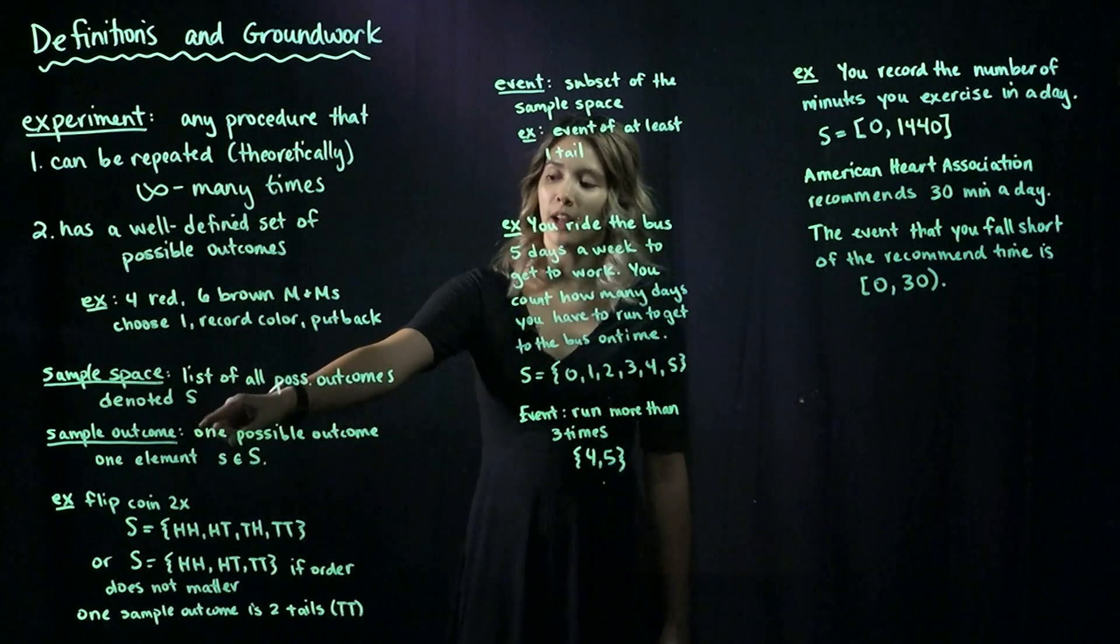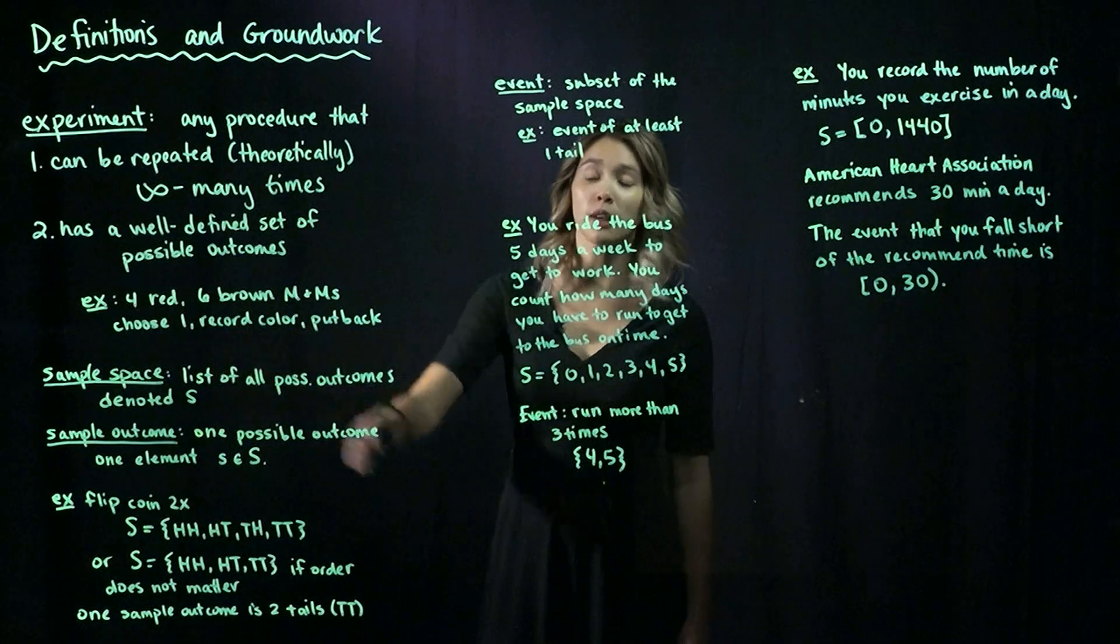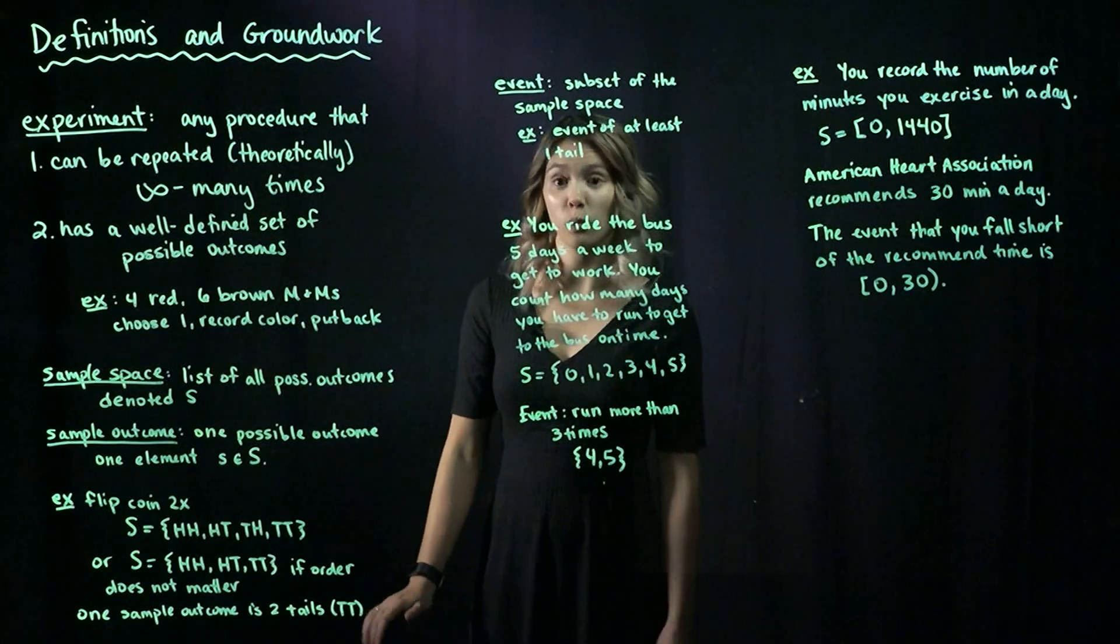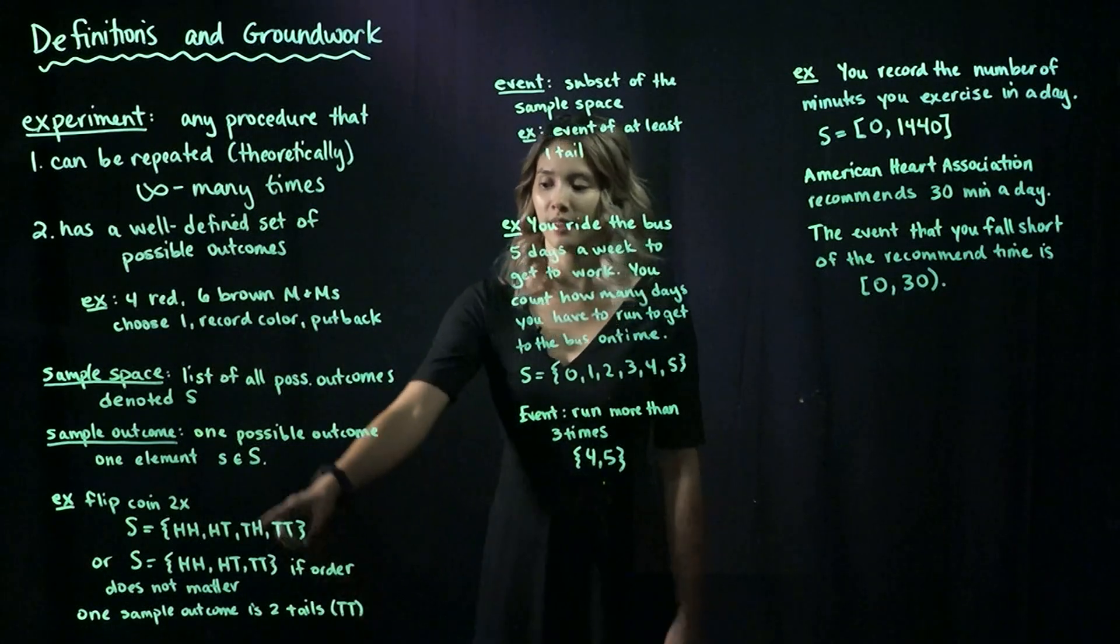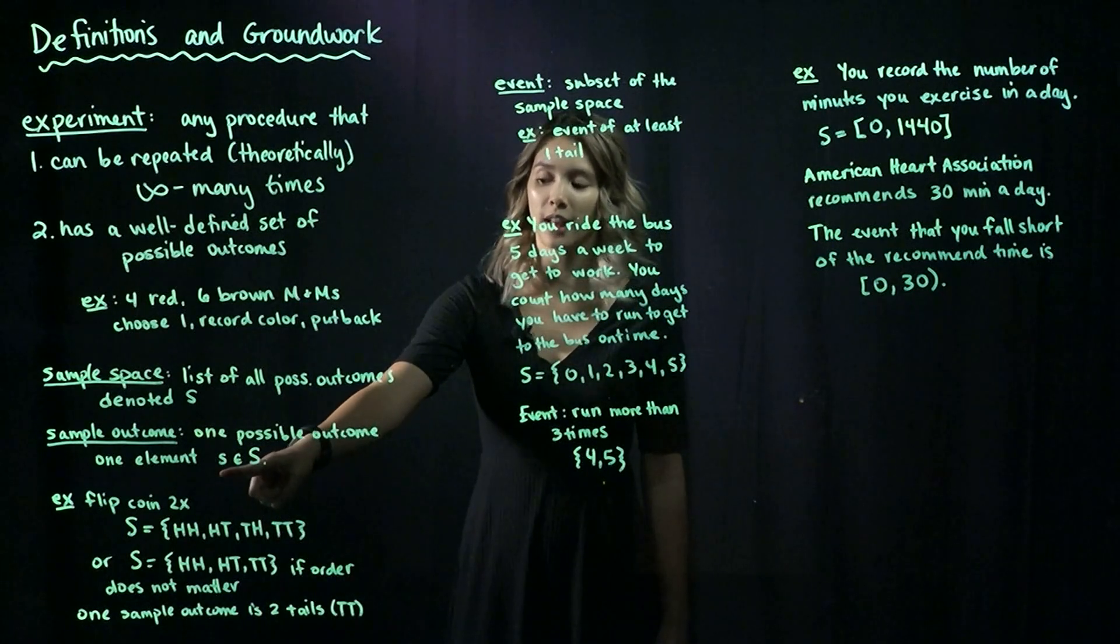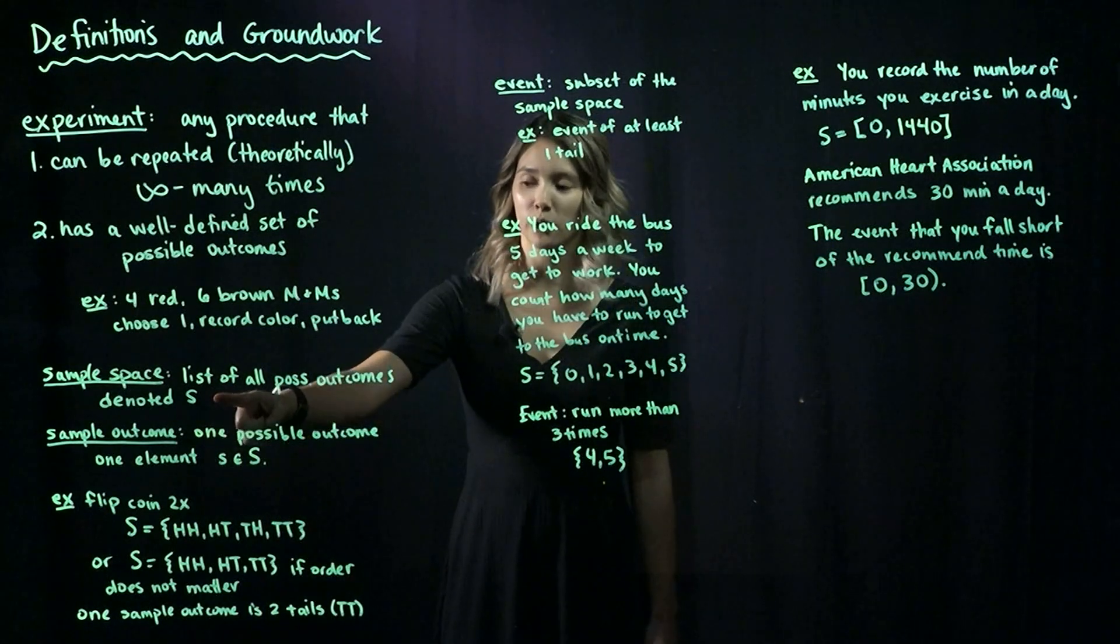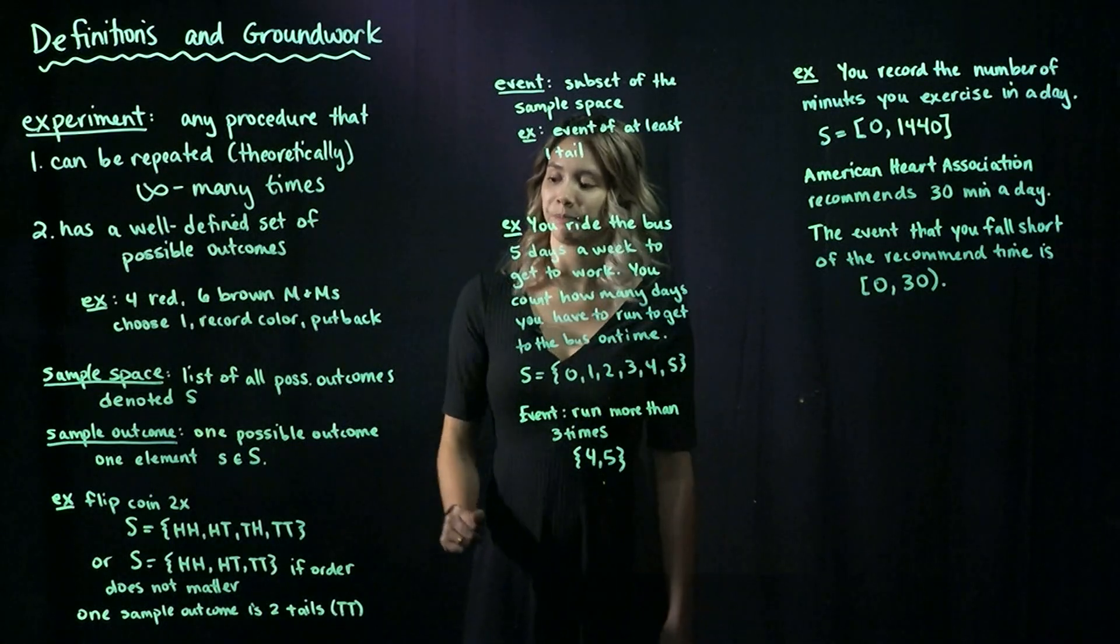This capital S is a set of all possible outcomes. If we just want to look at one possible outcome, then that is just one element in the set, and we can denote that with a little s, where the sample space is the capital S.